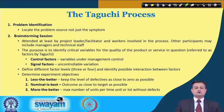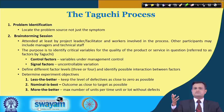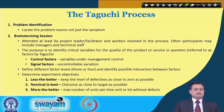The Taguchi process goes like this: first is problem identification, then brainstorming where you identify control factors and signal factors, and also determine the objective of your experimentation — for example, whether the quality characteristic is of the nature 'less is better,' 'nominal is the best,' or 'more the better.' These decisions are taken in the brainstorming session.